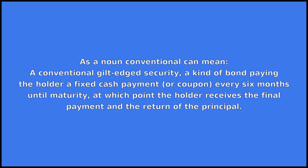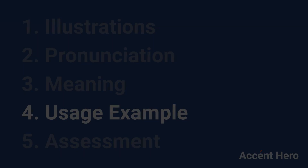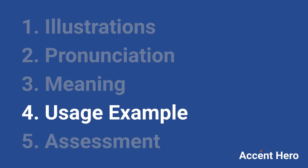As a noun, conventional can mean a conventional gilt-edged security — a kind of bond paying the holder a fixed cash payment every six months until maturity, at which point the holder receives the final payment and the return of the principal. For example: I asked if the conventional wisdom was correct.